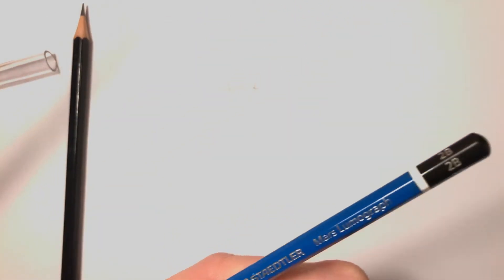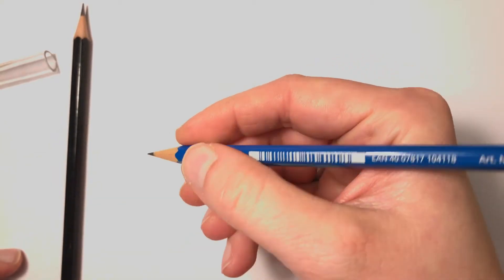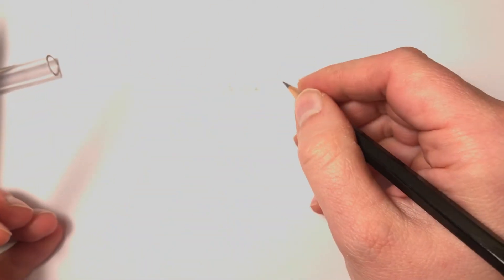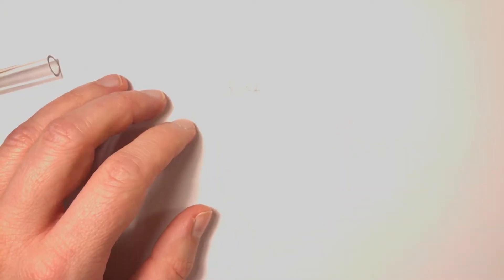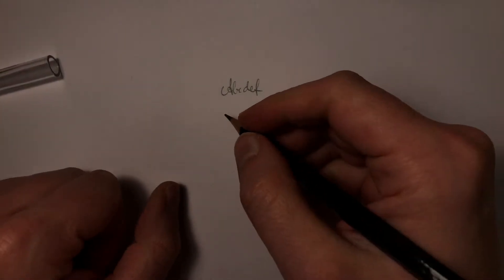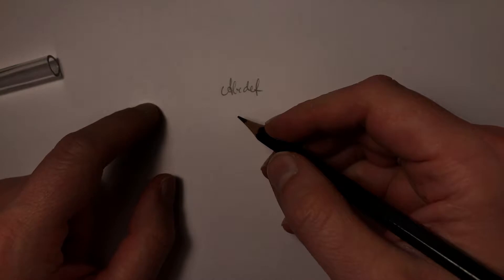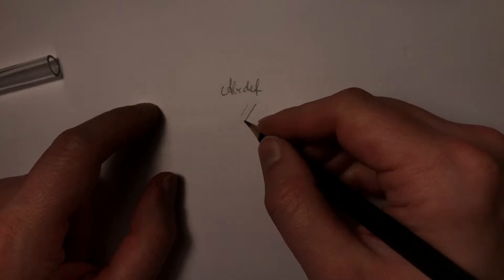I would normally compare them to, let's say, a Staedtler Lumograph. I would think they're somewhere between a 2B and 3B. Let's do a soft and a hard line. Actually let me change the lighting here. At least now you can read what I wrote.